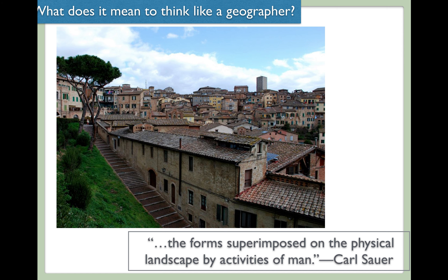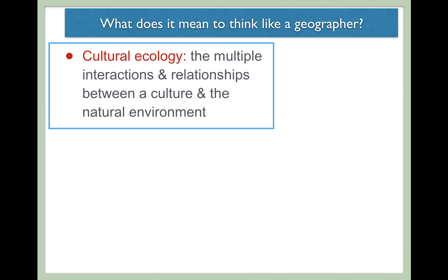Looking at two different pictures, you can see two different cultural landscapes. Simply seeing the way in which humans have modified the environment are clear indications of different groups of people, different resources available, different architectural practices, different living conditions. All of this is present just by looking at the way that humans change the environment.